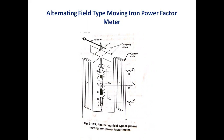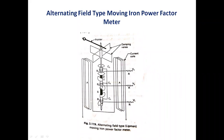The construction of the alternating field type moving iron power factor meter consists of three sets of moving iron: B1, B2, and B3, which are mounted on a common spindle. Non-magnetic materials — in older designs, soft wood — are used to separate B1, B2, and B3, which are displaced at 120 degrees from each other in parallel places.